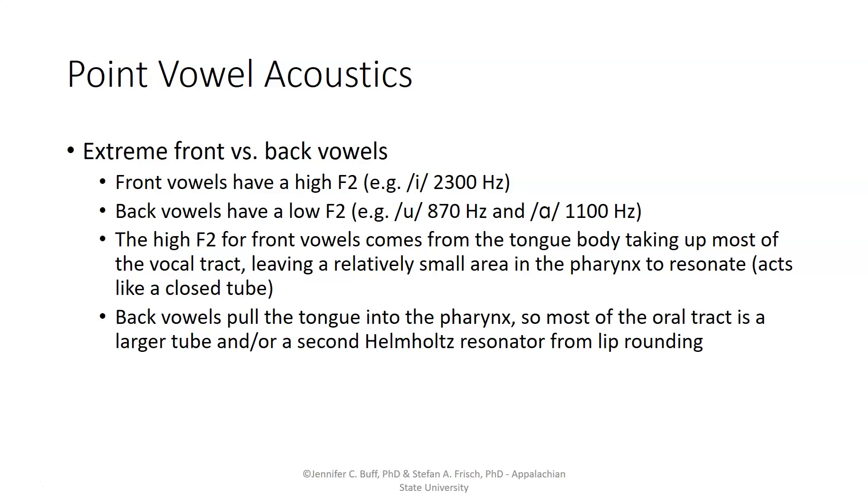The high second formant for front vowels comes from the fact that the tongue body makes up, takes up most of the vocal tract, leaving a relatively small area in the pharynx to resonate. In addition to that Helmholtz resonator shape, that pharyngeal cavity will act like a closed tube and have a separate resonance on the basis of the length of that tube, but since it's a relatively short tube, that will be a relatively high frequency.